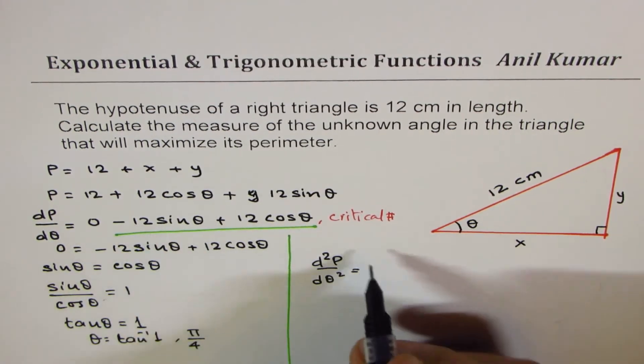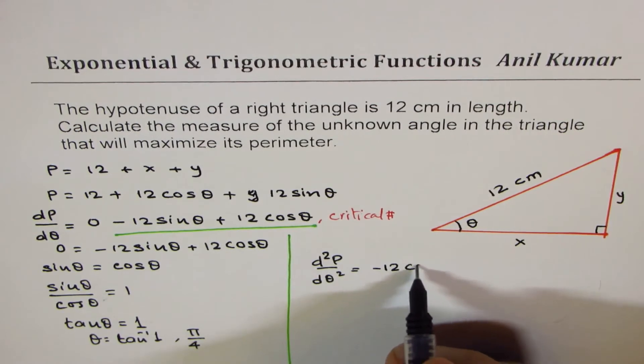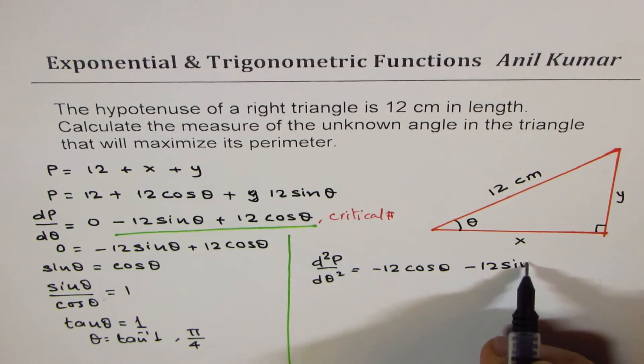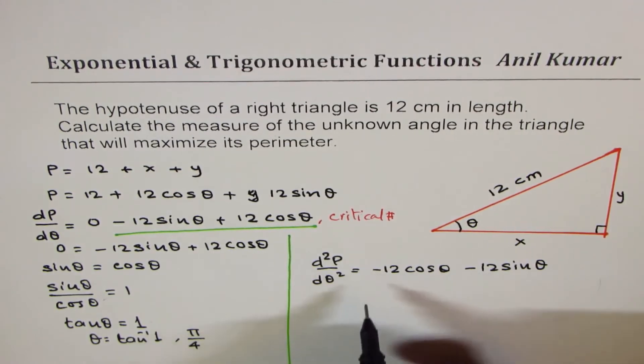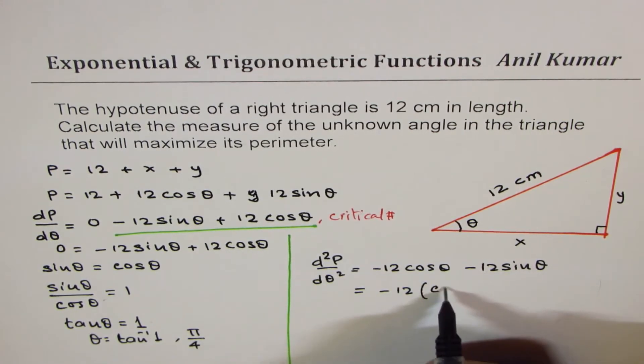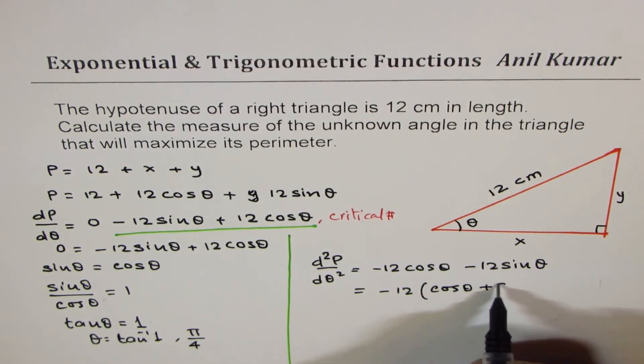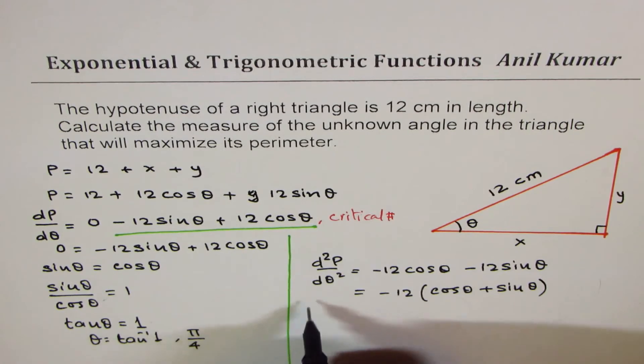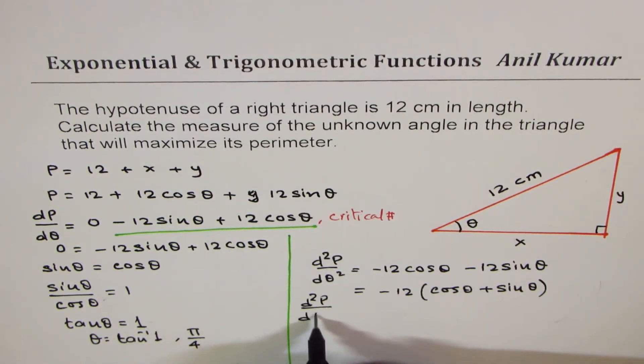Negative 12 cosine theta, right? And cos θ derivative is negative, we get negative 12 sine theta. Now in this case, if I take negative 12 common, I'm left with cos θ + sin θ as the result. For π/4, if I substitute π/4 here, what do I get?